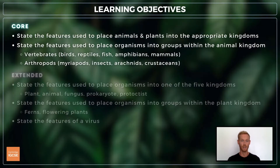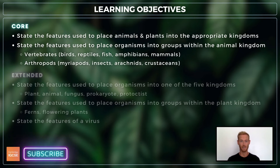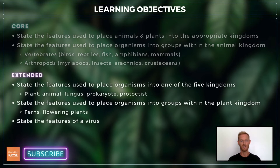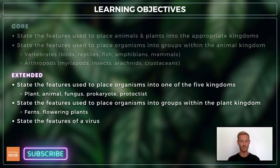For topic 1.3 you need to state the main features used to place organisms into the different kingdoms, and state the main features used to place organisms into groups within the animal kingdom. As you can see, the extended course is a little more detailed and includes information on plants, viruses and all five kingdoms. We'll begin with the core content, but you can skip to the relevant sections using the timestamps below.